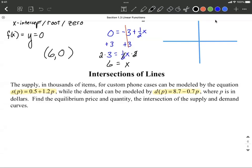So the intersection is going to occur whenever they're equal to one another. So what I'm going to do is set them equal to each other. 0.5 plus 1.2p is going to equal 8.7 minus 0.7p.